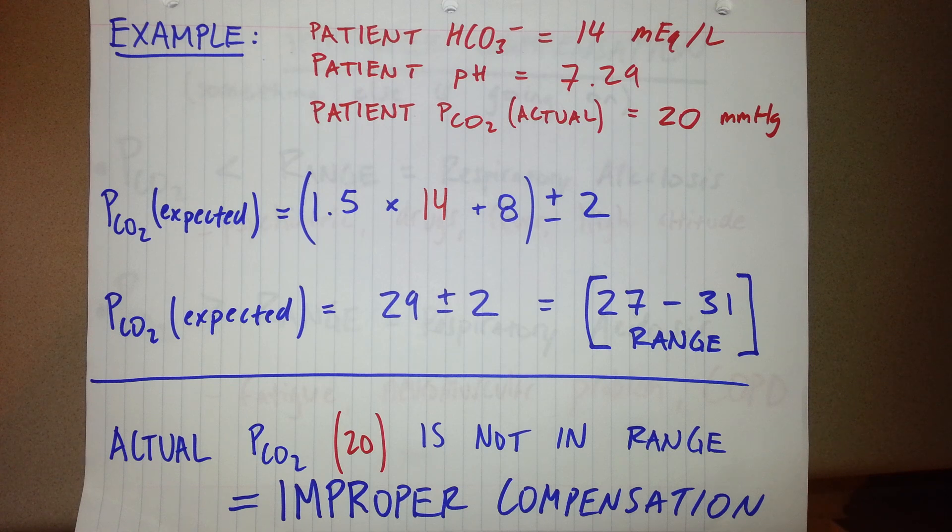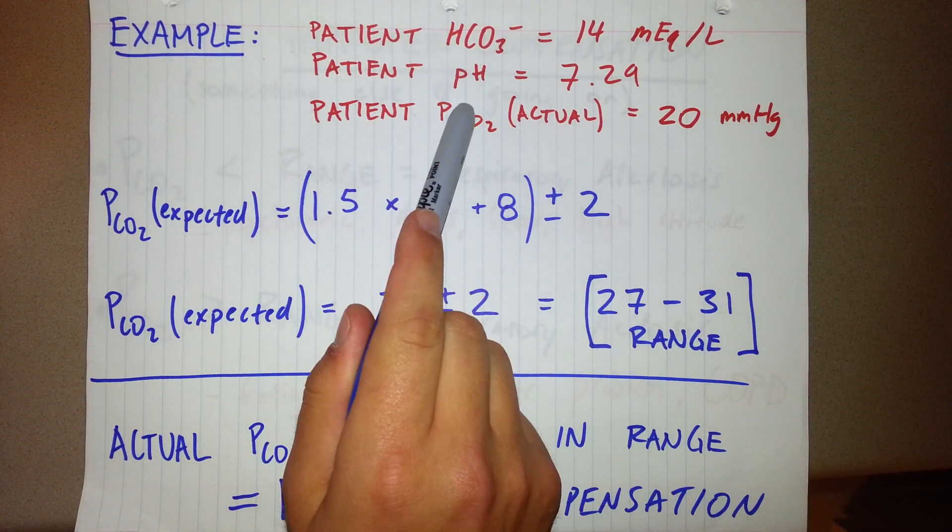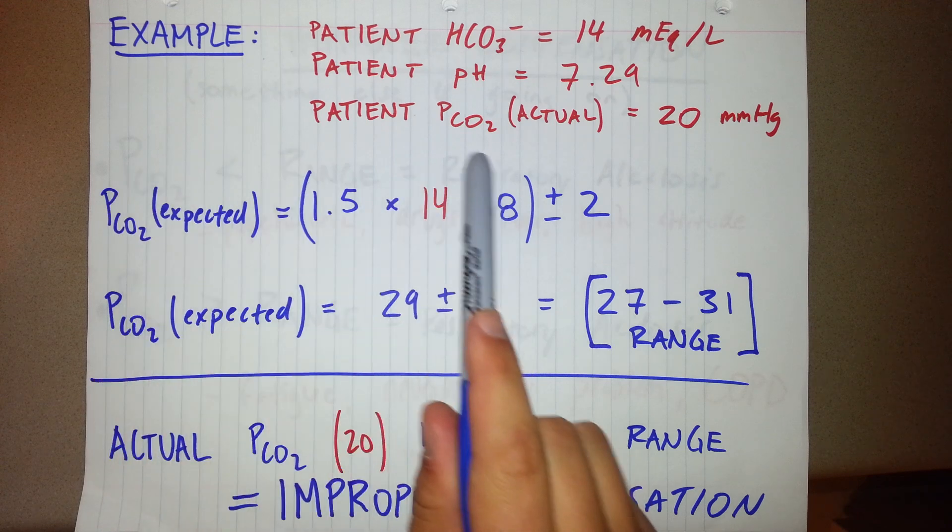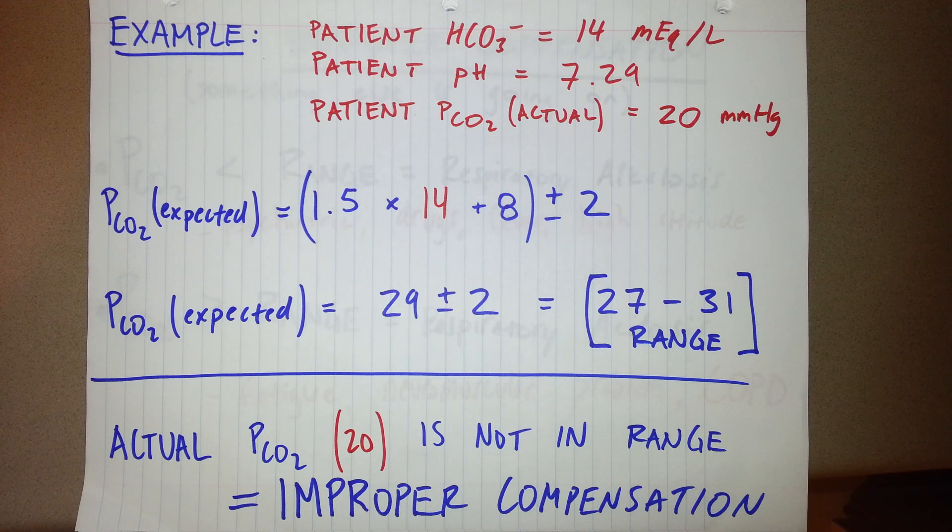So let's move on to an example. We have a patient who has been experiencing diarrhea and thus their bicarbonate levels are low. I listed up at the top here a low bicarbonate, an acidic pH, and what the patient's actual, or from arterial blood gas, partial pressure of CO2.